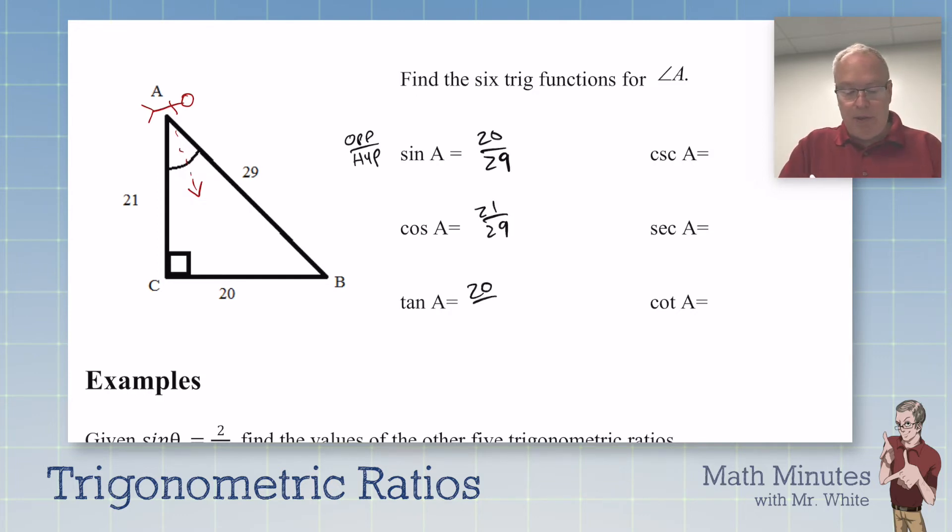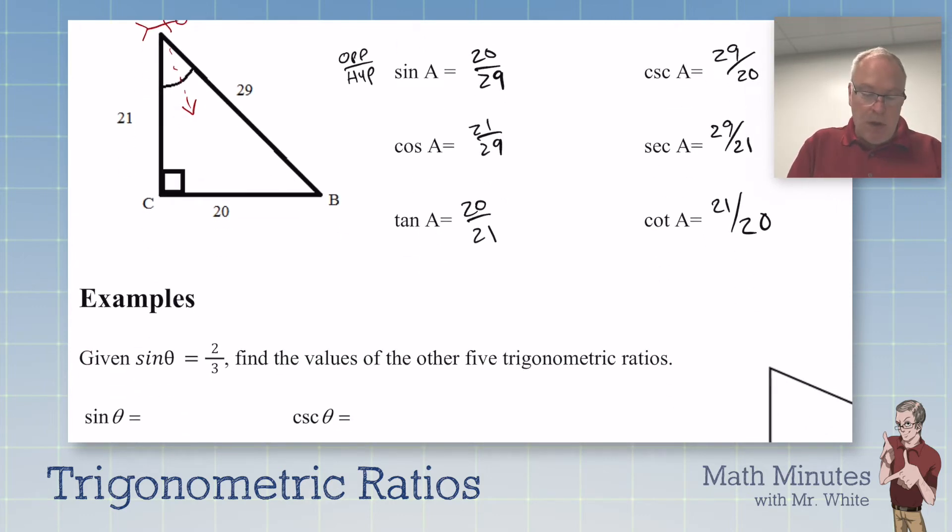Cosine would be 21 over 29. Tangent is going to be opposite over adjacent leg. And then, again, I've set all these up nicely for you so that all you have to do is flip over the fractions to get the other three trig functions, 21 over 20. Isn't that easy?